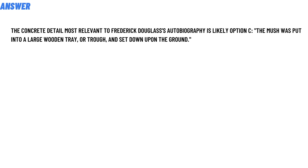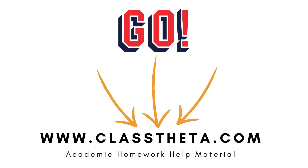The correct answer to the question is that the constraint detail most relevant to Frederick Douglass's autobiography is option C: the marsh passed into the large wooden tray or throw and set down upon the ground. That is the answer to the question.